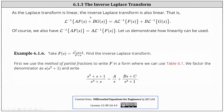As the Laplace transform is linear, the inverse Laplace transform is also linear. That is, the inverse Laplace transform of a·F(s) + b·G(s) equals a times the inverse Laplace transform of F(s) plus b times the inverse Laplace transform of G(s). We also have the inverse Laplace transform of a·F(s) equals a times the inverse Laplace transform of F(s). Let us demonstrate how linearity can be used.